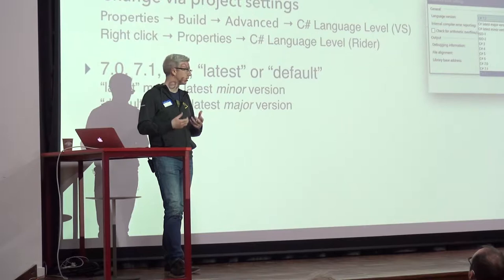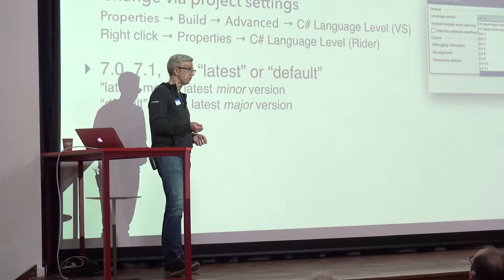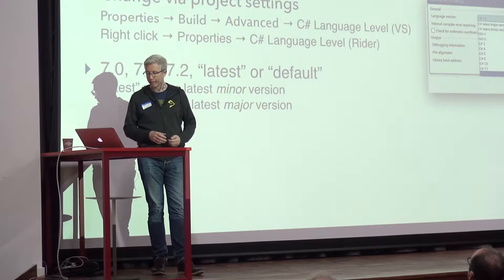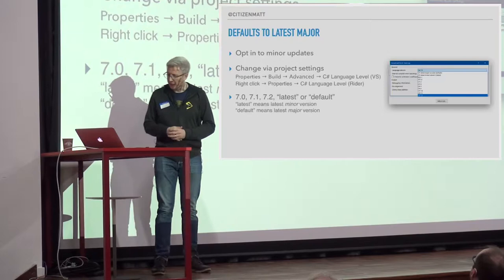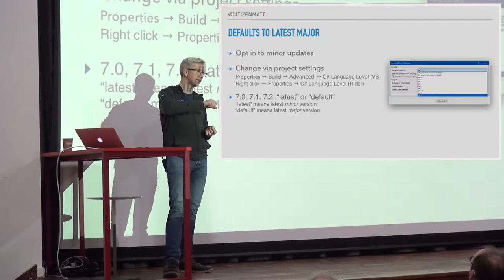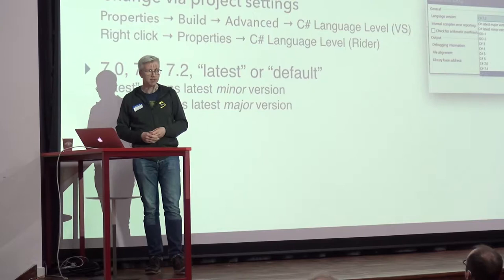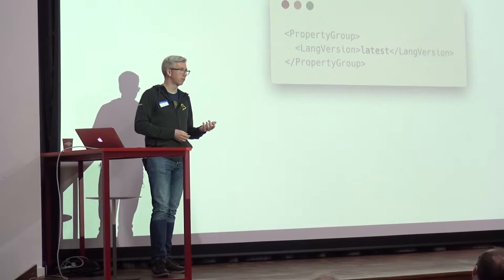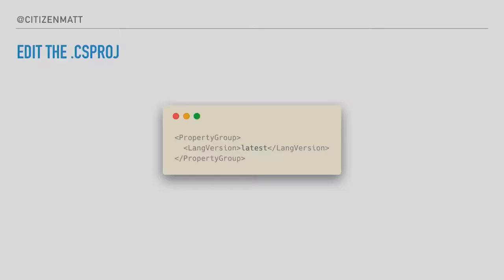To change it, in Visual Studio you bring up the project properties, go to Build > Advanced > C# language level, and you get a drop-down to change it. In Rider, it's right-click the project, bring up properties, and you get a similar drop-down. You get the choice of 7.0, 7.1, 7.2, 'latest', or 'default'. Latest means the latest actual version — so when 7.3 is released you'll just get 7.3. Default means the latest major version, currently 7.0, which will become 8.0 on the next big release. You can also just edit the project file's LangVersion element manually.